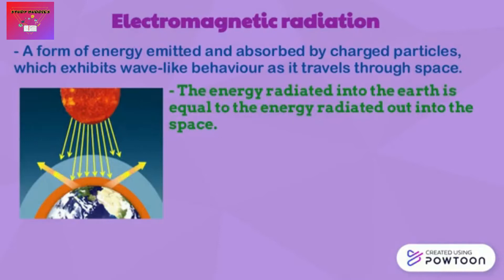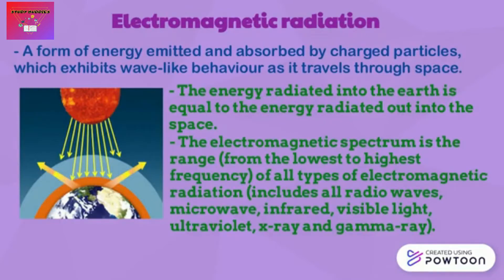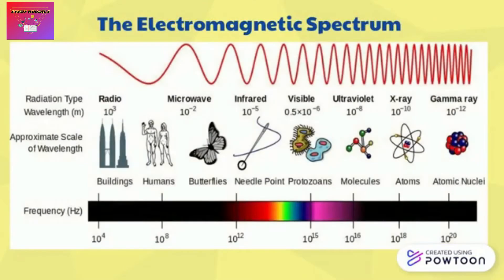The electromagnetic spectrum is the range from the lowest to highest frequency of all types of electromagnetic radiations, which includes radio waves, microwave, infrared, visible light, ultraviolet, x-ray, and finally gamma rays. The examples of products using electromagnetic radiations are shown in this diagram.